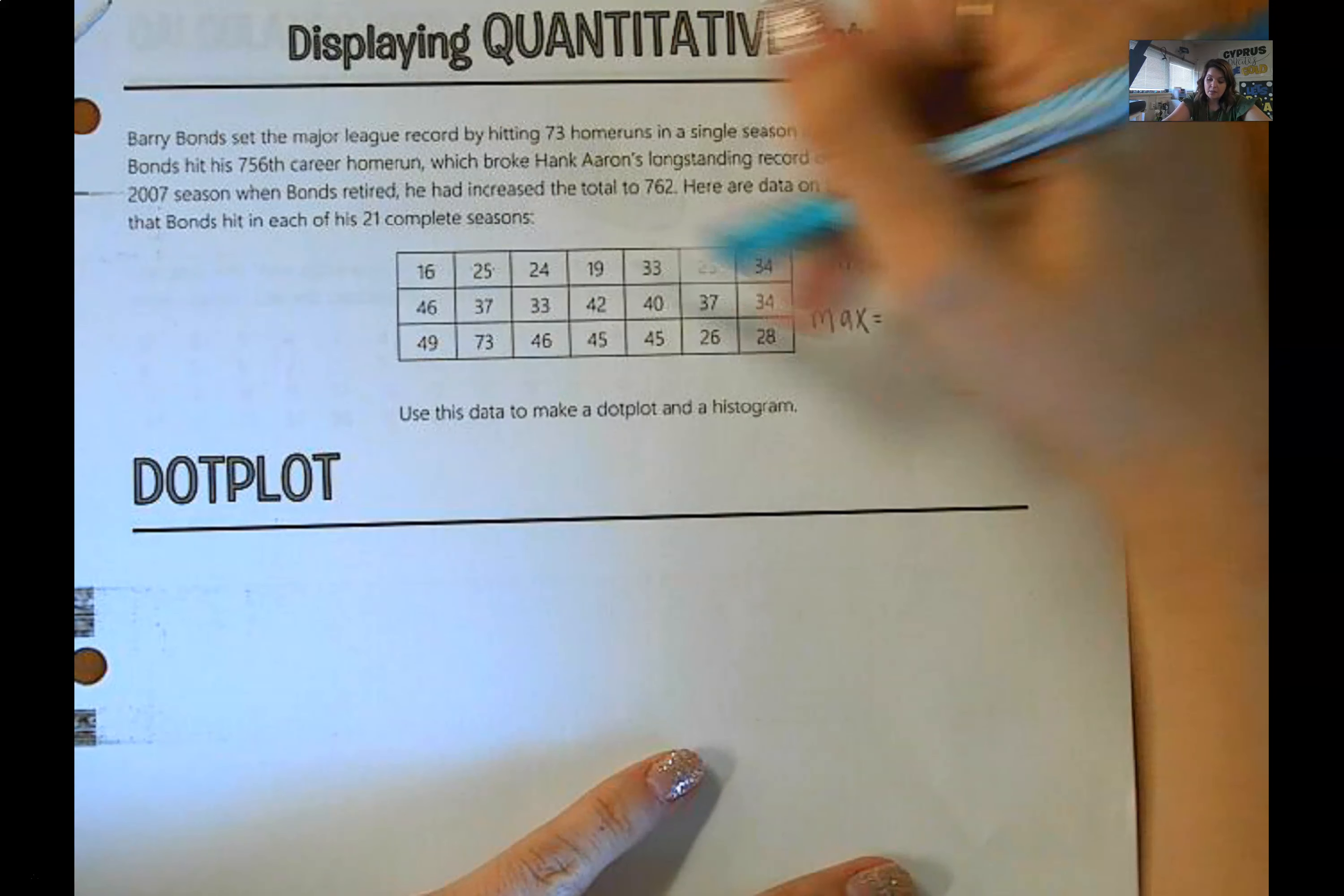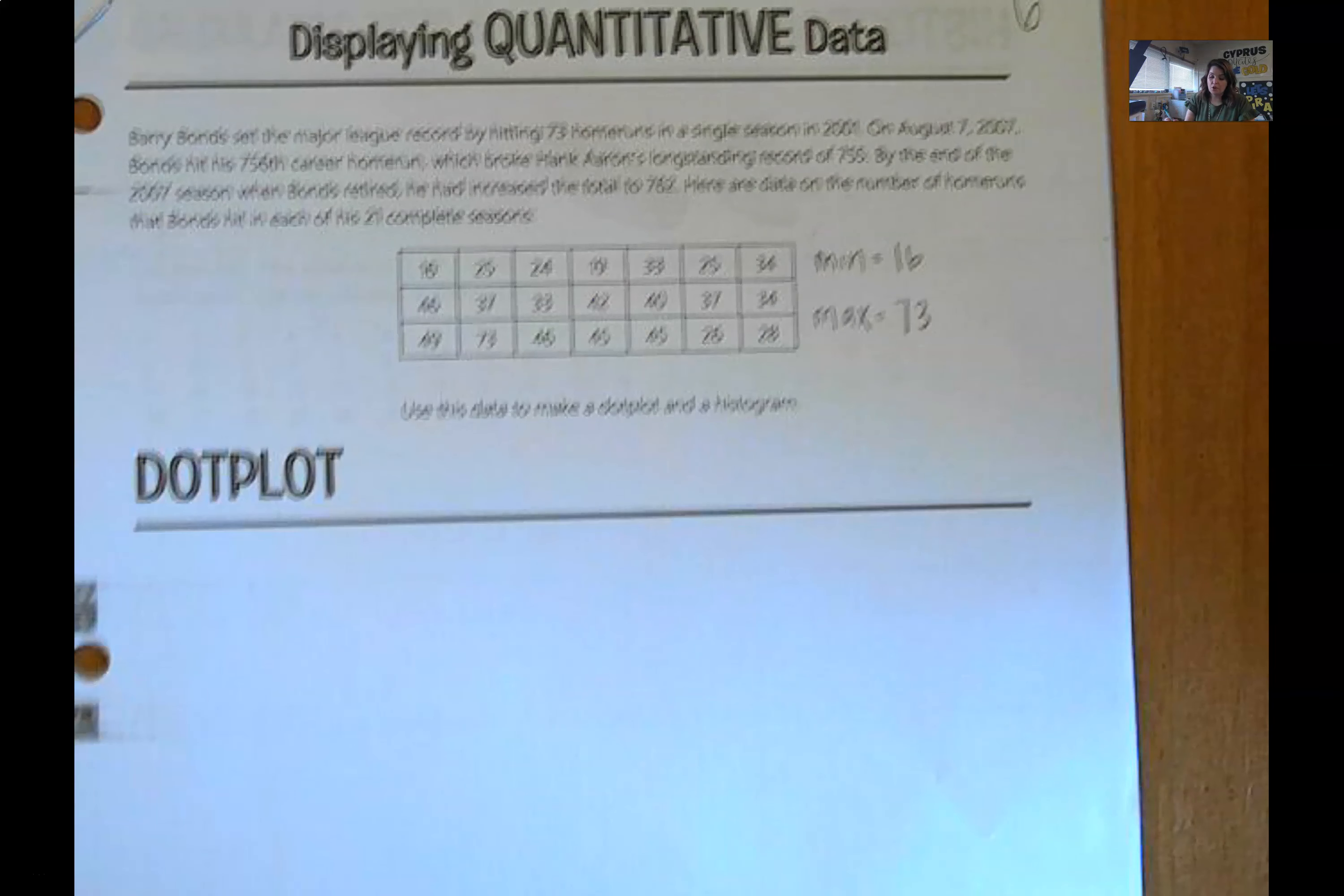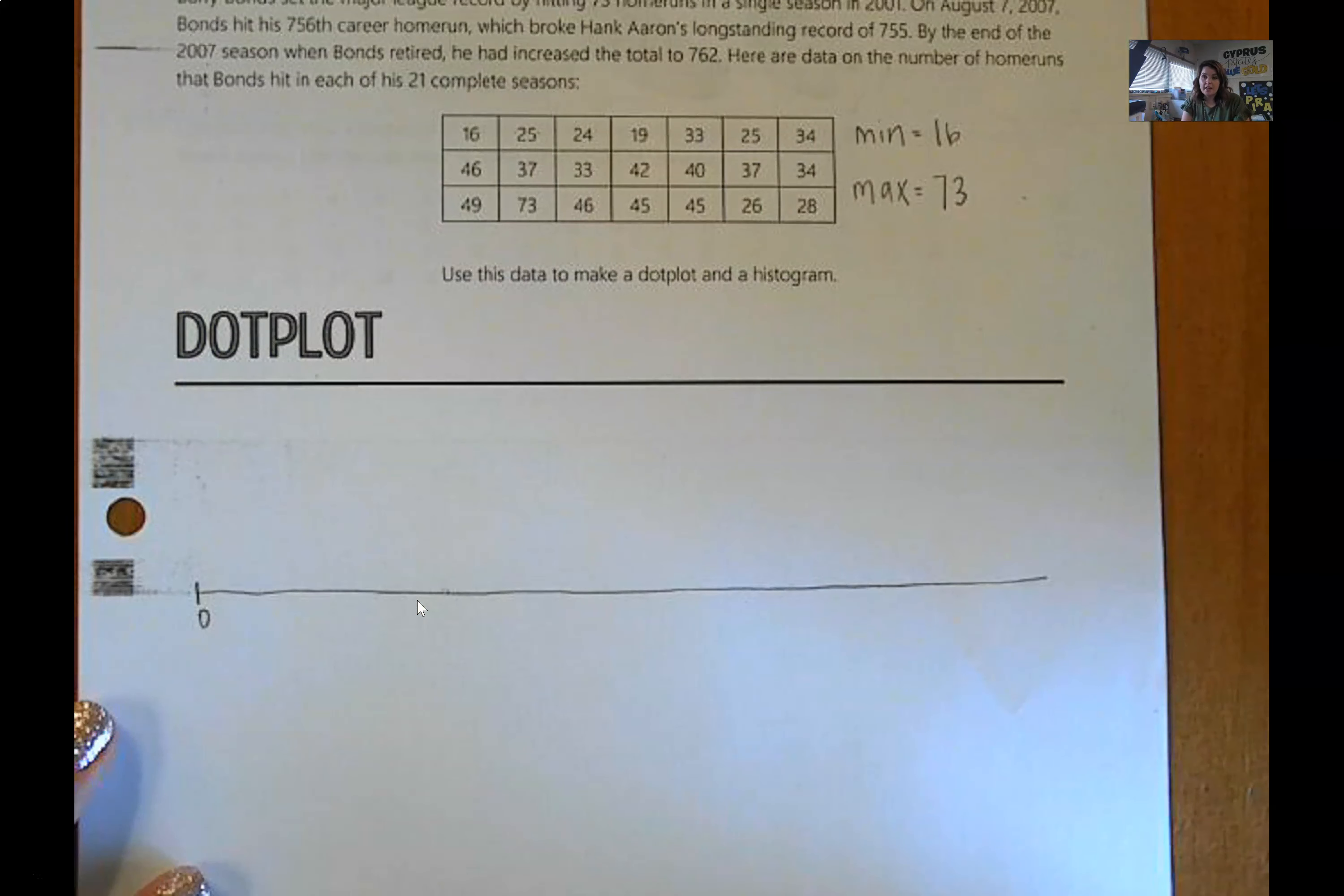So the first thing that I'm going to do is identify the minimum value in my data set and the maximum value in my data set, because that's going to help me decide how I should scale my axis. So if I look through this table, it's looking like 16 is my minimum, and 73 is my maximum, which is kind of unfortunate, because those are a lot of values that we have to cover on our x-axis to make this dot plot. So I'm going to draw a line about this far down, and unfortunately it does need to be about that long, because we have to go from 16 to 73. I think I'm going to start over here at 0. You could start at 10 or 15 if you wanted to, but I guess I'm kind of feeling like go big or go home, so I'll just start at 0.